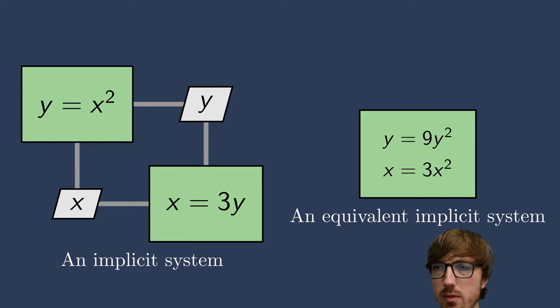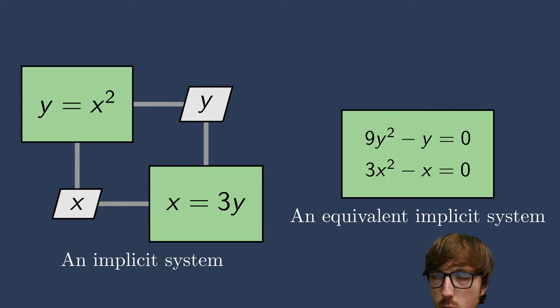So previously, we had an implicit system which was a series of explicit components that are talking to each other, passing information and creating this implicit setup. But we can also have a singular component that is implicit. If we rearrange the equations here, we can see, okay, y equals 9y squared and 3x squared equals x. We can also rearrange that now to the same nomenclature that we had before, where we have two equations that we're trying to get equal to zero. Here, you can imagine this as a series of two equations with two unknowns.